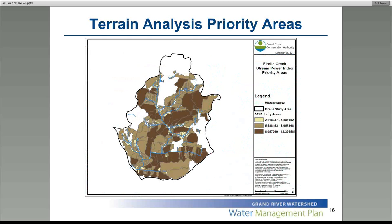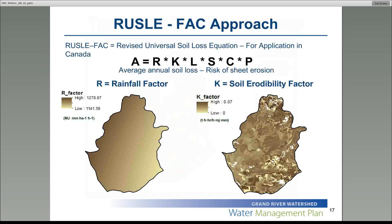Here is a small sample of these catchments. We categorized them into high, medium, and low classes — high is the dark brown and low is the yellowy-beige color. Once we calculated our priority areas, we further wanted to understand the average annual soil loss potential in our study area, and we did this using the RUSLE-FACT.